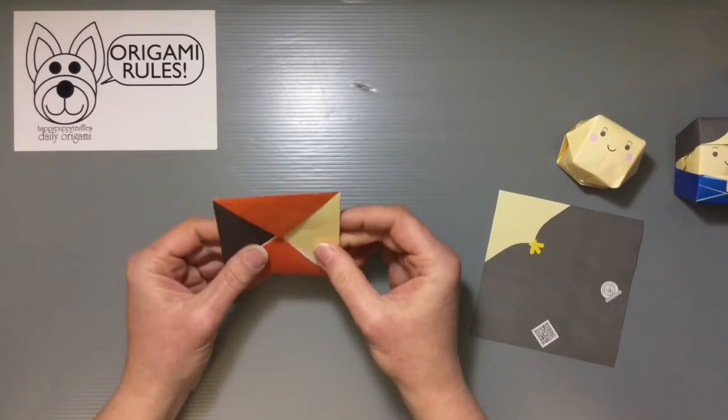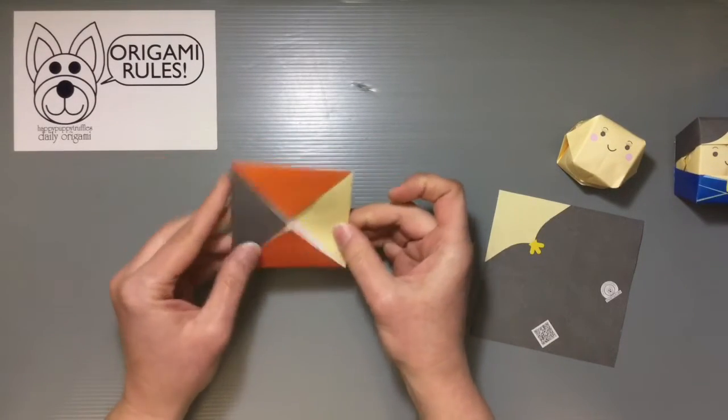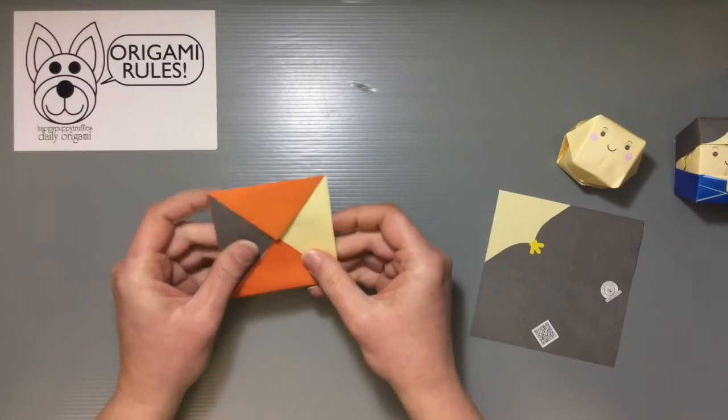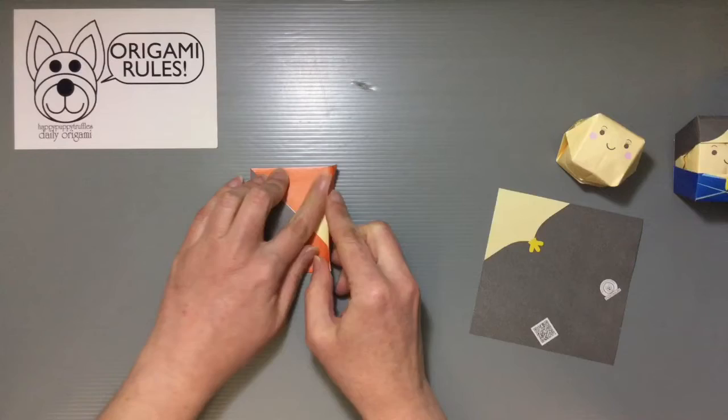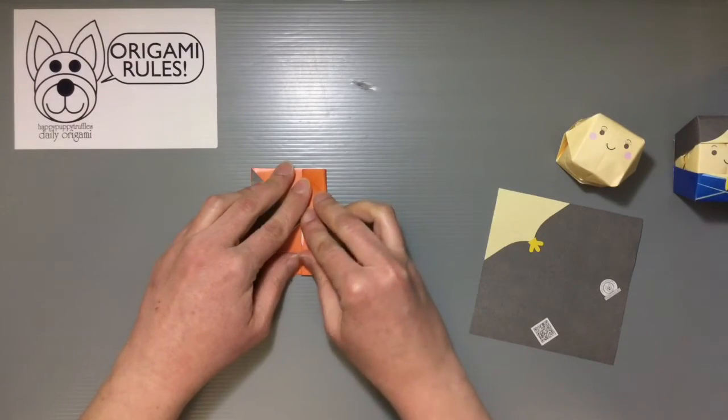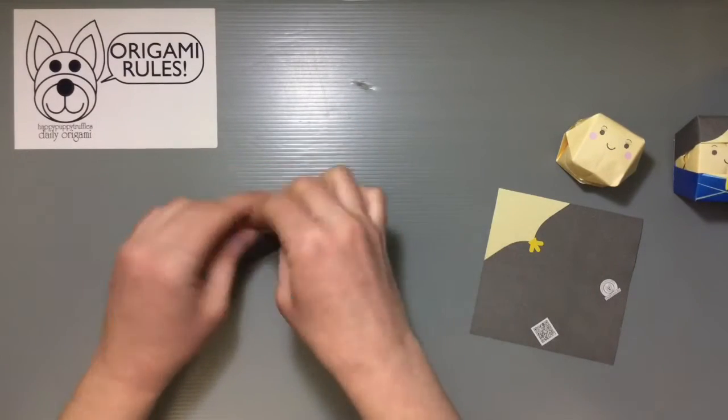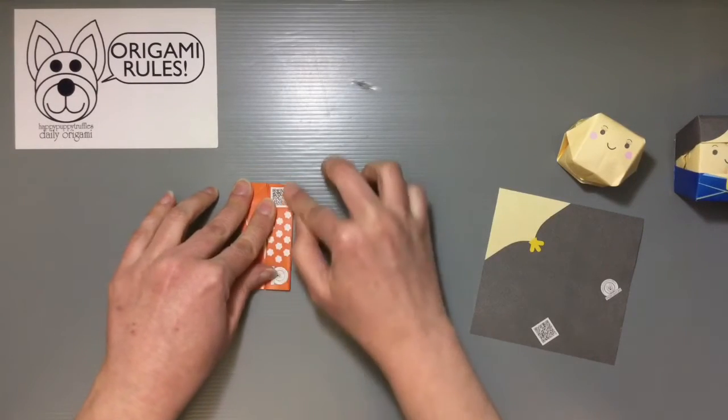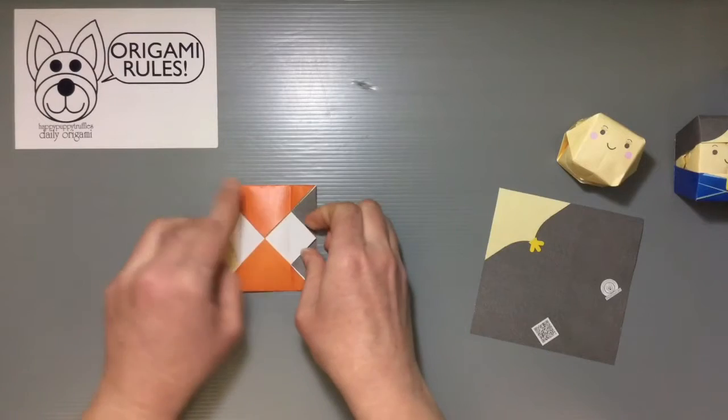So you get something like this. Now if you're kind of looking at things, you can kind of tell this is her head and this is part of her head too. What we want to do for those is we're going to go ahead and use that to guide us as we fold this part up into the center and then this side as well.